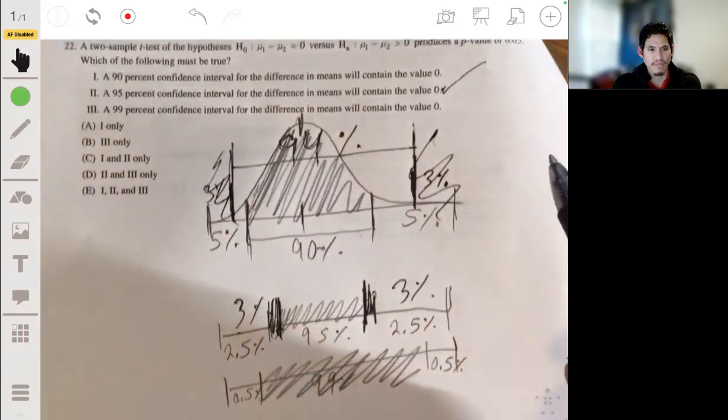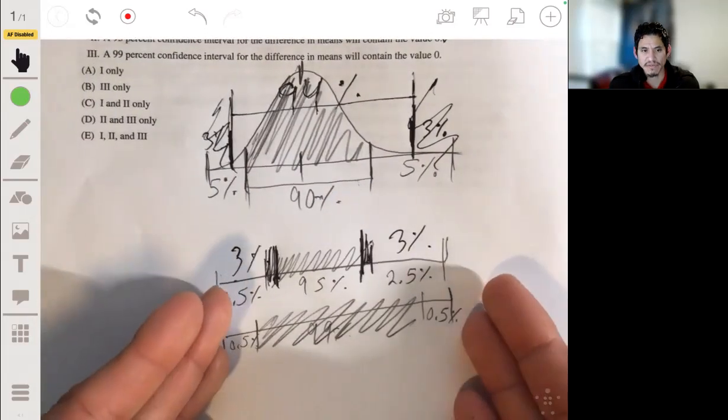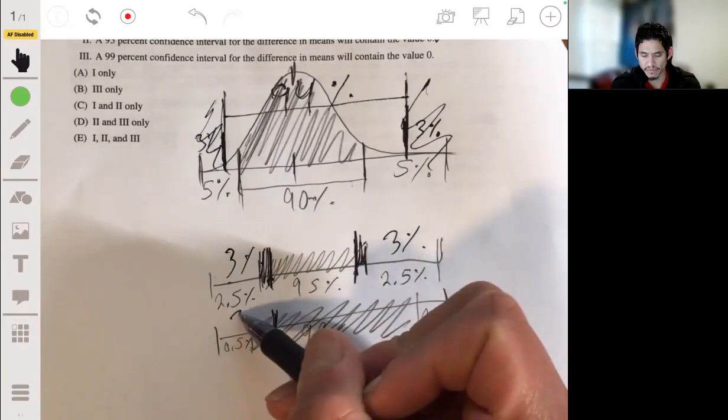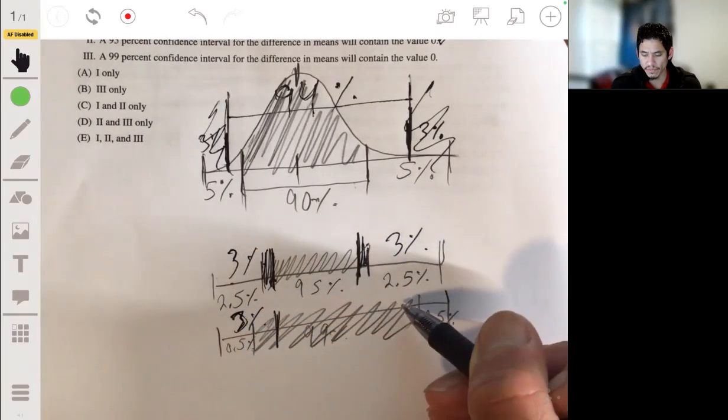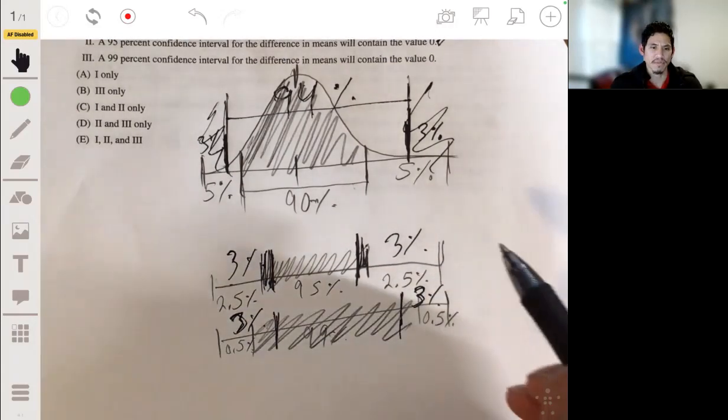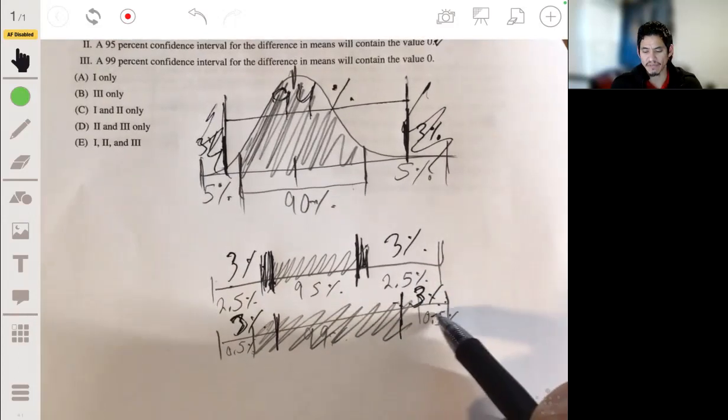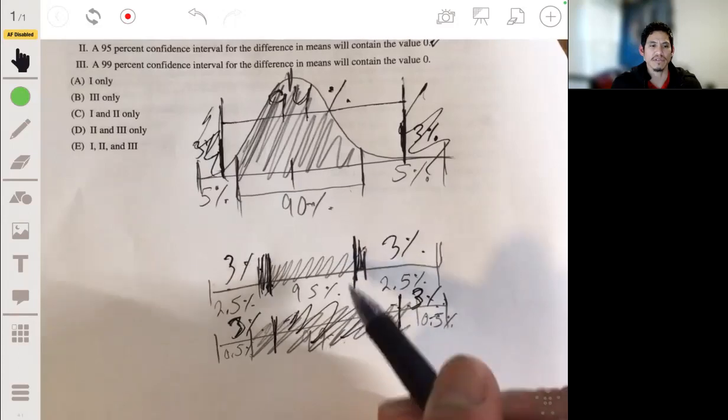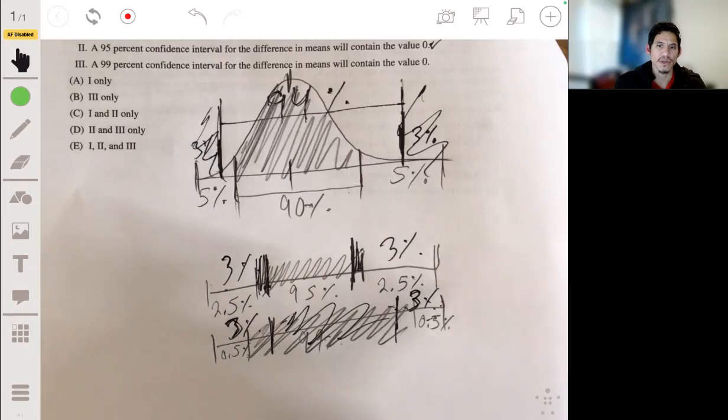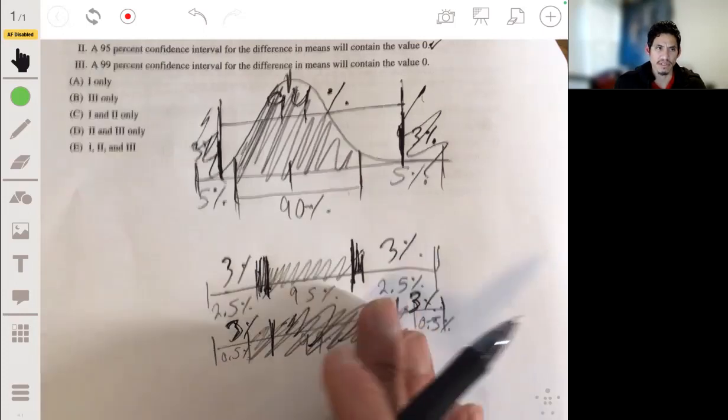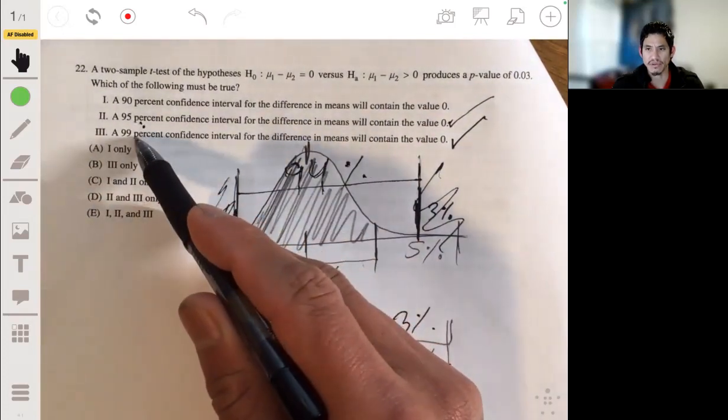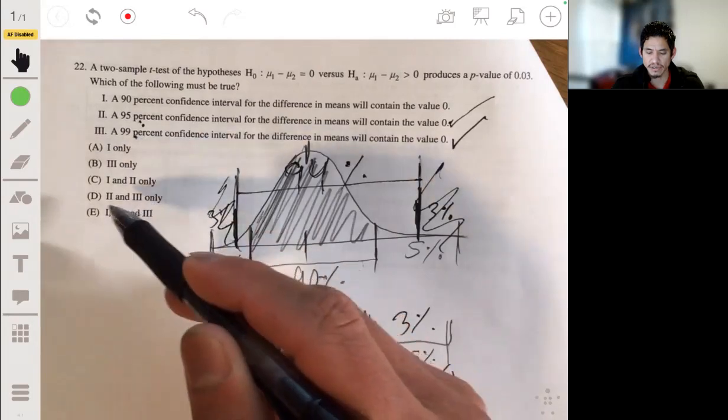Number one won't be true. And that same thing, since a 99% is even wider, it's definitely going to capture your null hypothesis value. Because you've got three percent and only half a percent left over. So it's going to be the same conclusion with the 95% one. You're going to fail to reject H0. So the confidence interval is going to capture zero still. So it's going to contain zero. So two and three would be correct. Then your answer will be B.